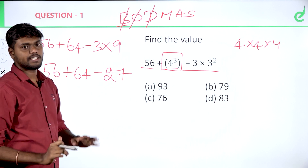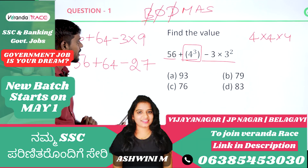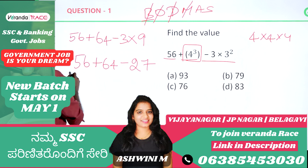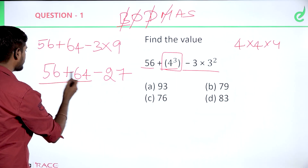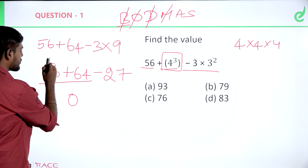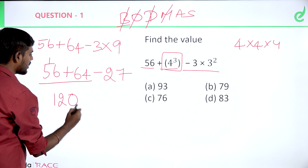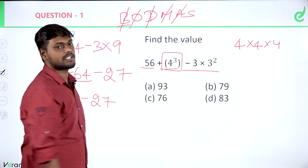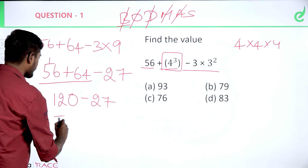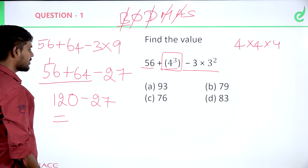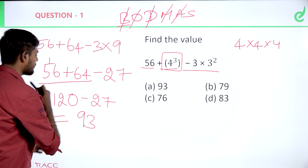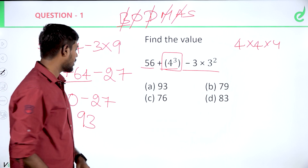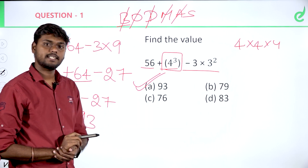Next step: multiplication. So we have 56 plus 64 minus 3 into 9. Multiplication: 3 into 9 is 27. Next is addition: 56 plus 64 is 120. Then subtraction: 120 minus 27 is 93. So option A, 93, is the correct answer.